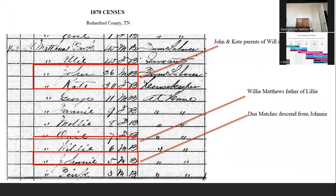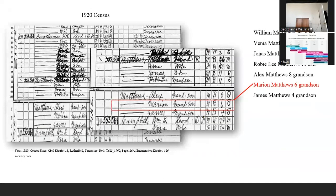Here you see John and Kate are the parents of Will and Johnny. Willie Matthews is the father of Lily, and DNA matches descend from Johnny. So then I found the 1920 census for William Matthews, who was 56, in the household with his wife Venia, their sons Jonas and Robbie Lee, grandson Alex, grandson Marion Matthews — age 6 — and grandson James Matthews — age 4. That about blew my top because there was Marion, who I was looking for. I couldn't find him because he wasn't listed as Marion Snead but as Marion Matthews.